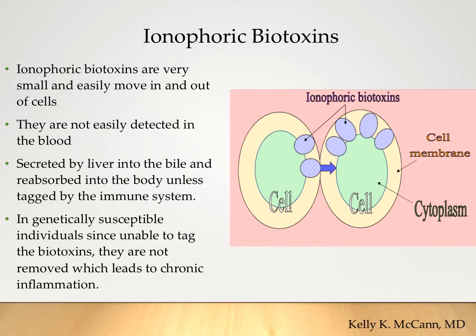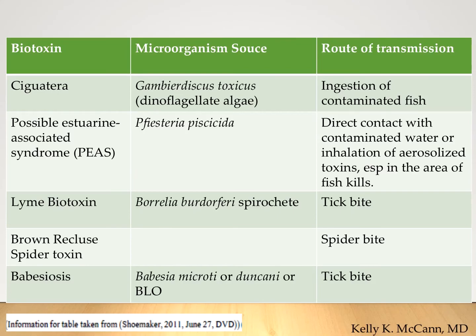One important point about biotoxins: they are teeny, tiny. They float in and out of the cell membrane, so we can't easily detect them in blood. They are secreted by the liver into the bile and get reabsorbed into the body unless tagged by the immune system — but many of these patients can't tag them, so we can't get rid of the biotoxins, leading to chronic inflammation. And mold is not the only organism that produces biotoxins — ciguatera, Pfisteria, perhaps Lyme, the brown recluse spider, and Babesia may also produce biotoxins.